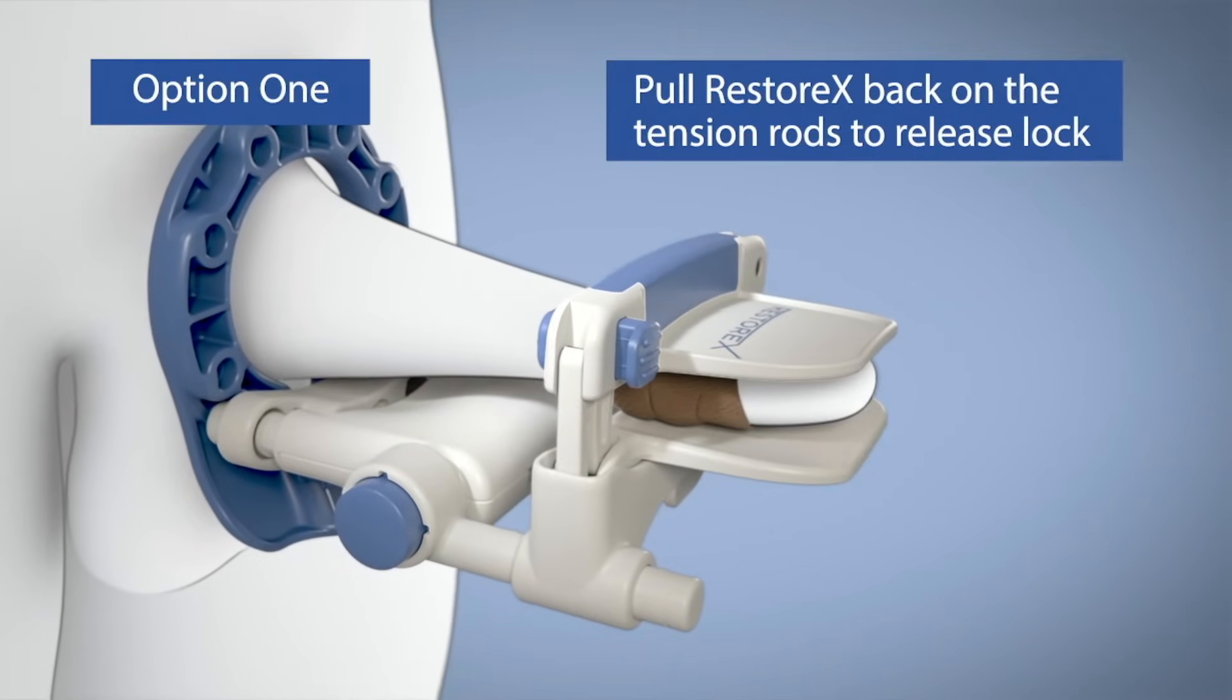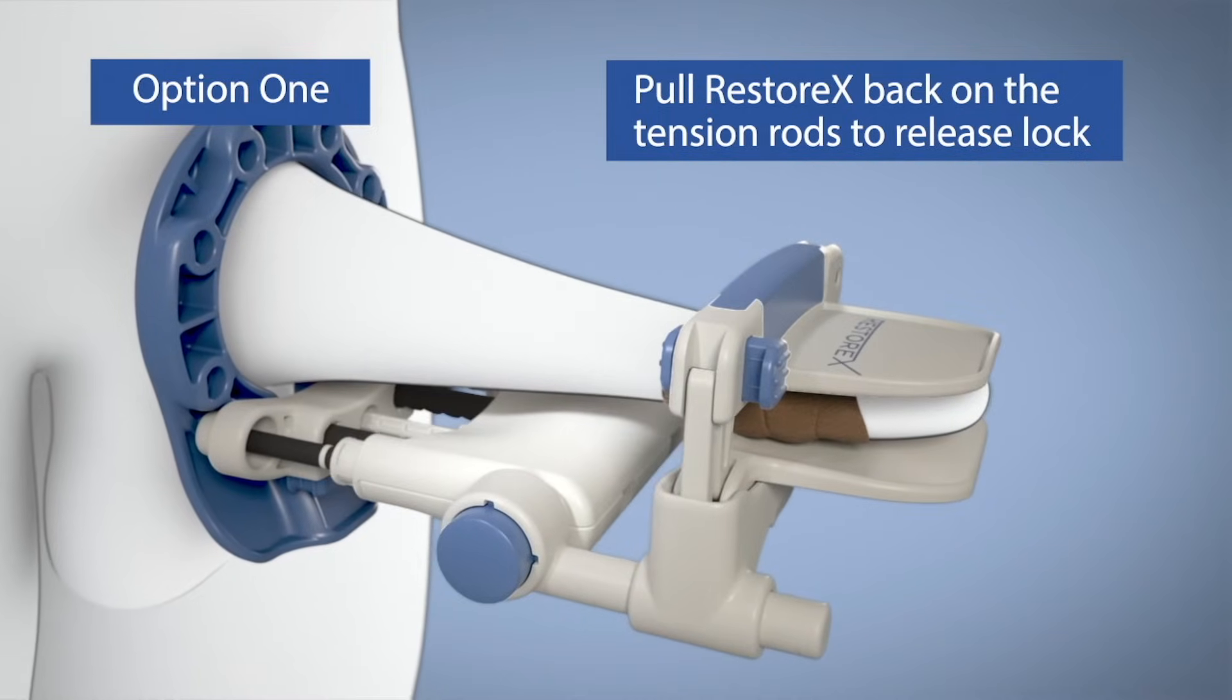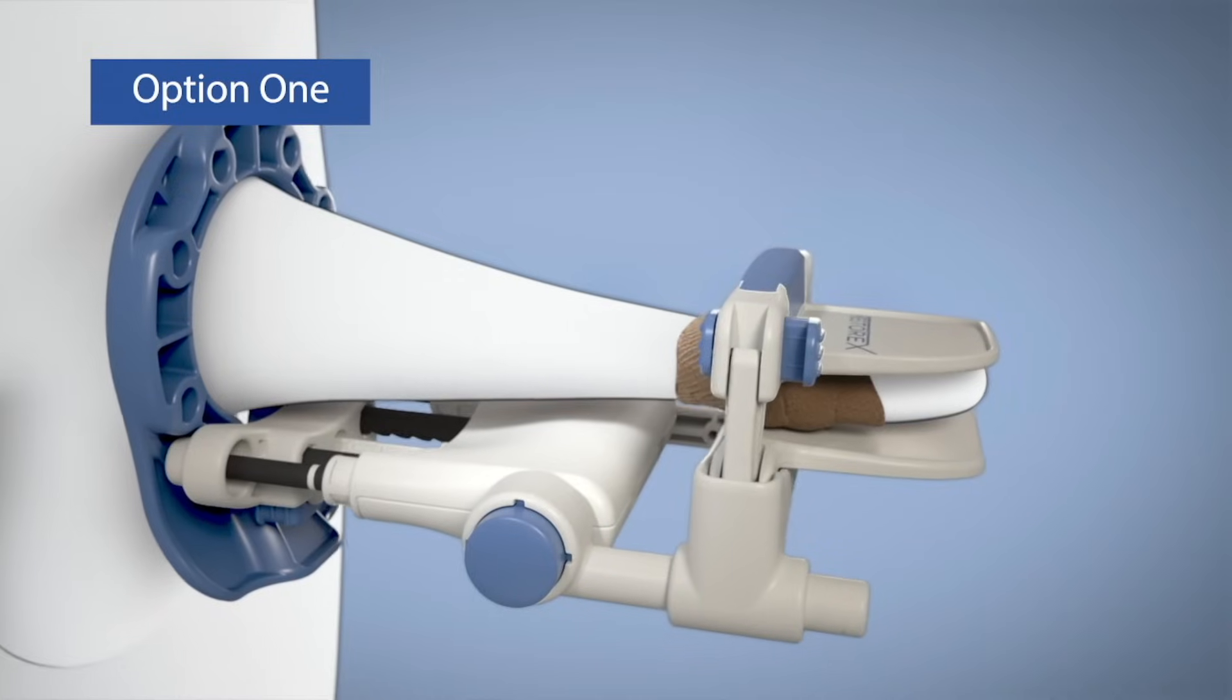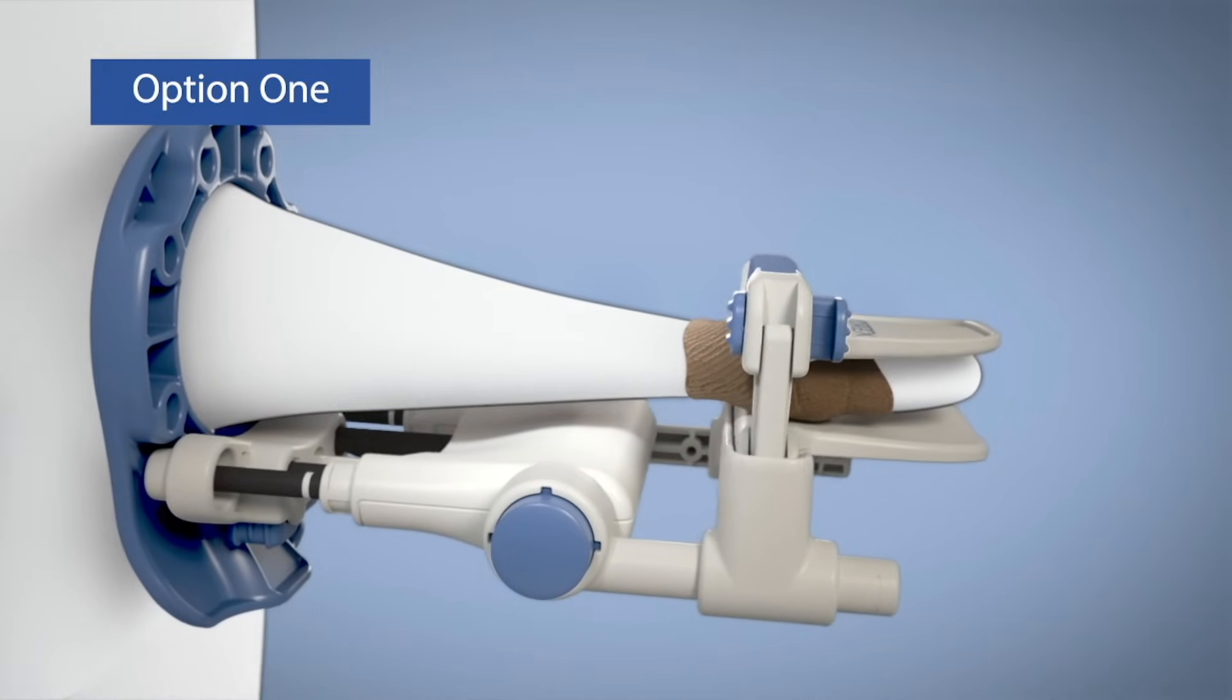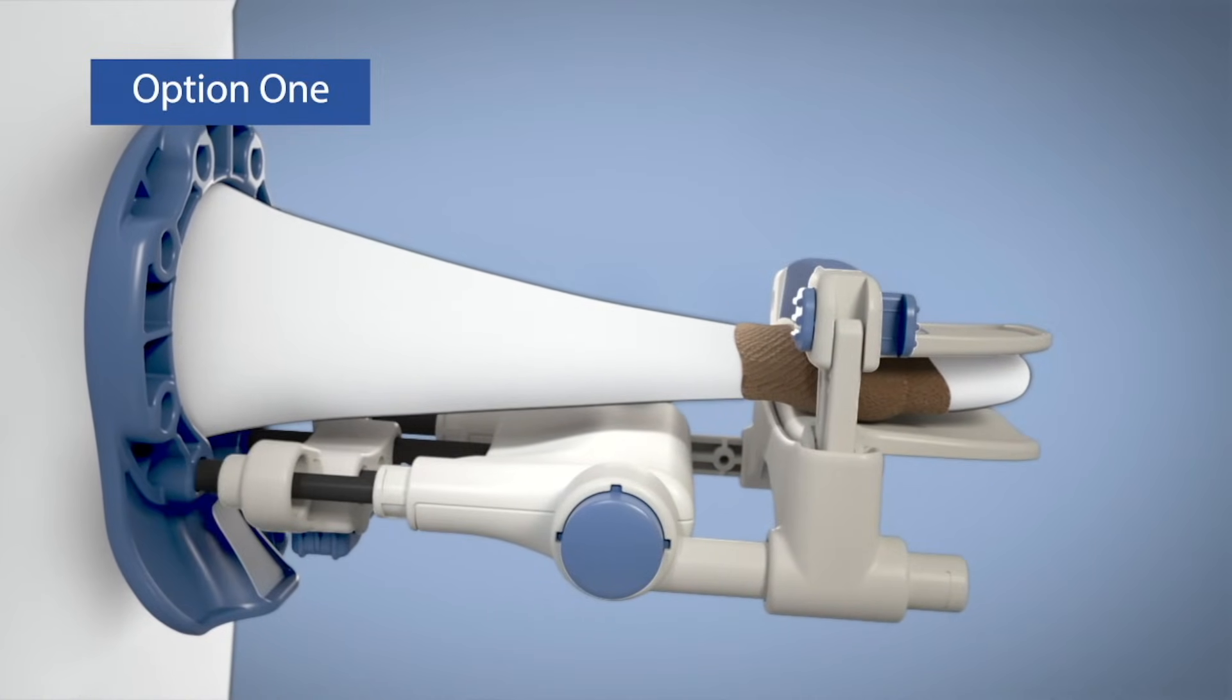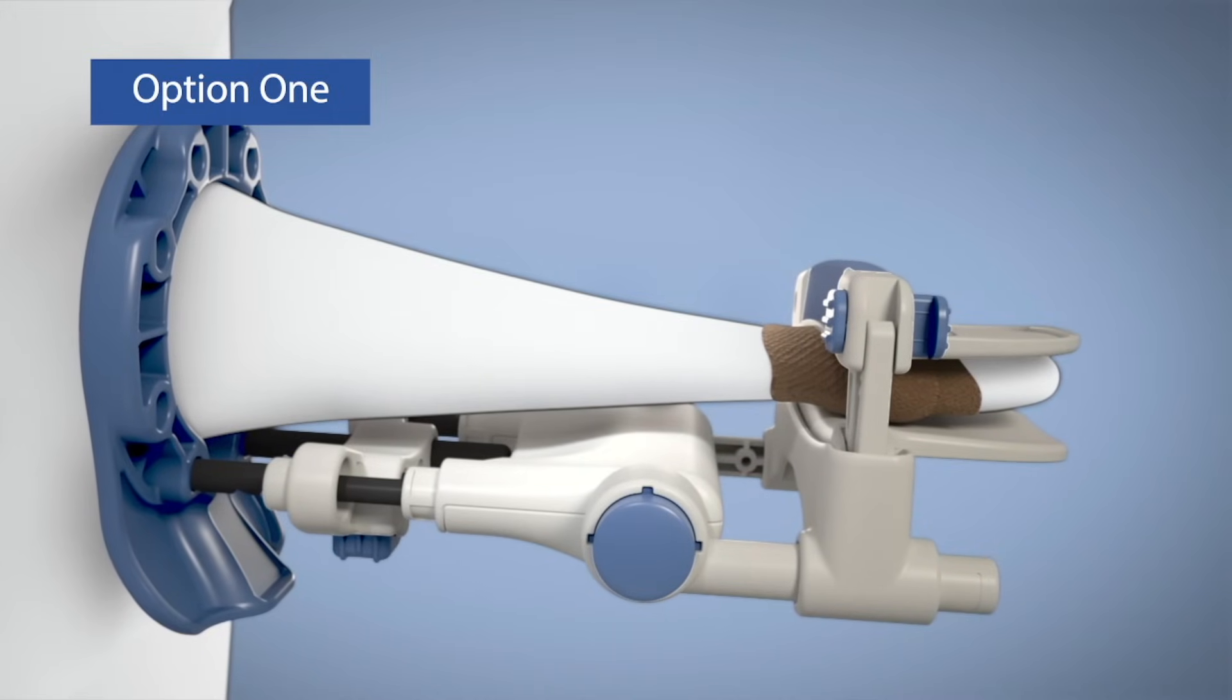Second, as shown, pull Restorex back on the tension rods to release the lock, and then slowly and gently release the springs. Next, while holding the pelvic ring against your body with one hand, lengthen Restorex by pushing it along the extension rods one notch at a time until the white bands on each tension rod can no longer be seen.